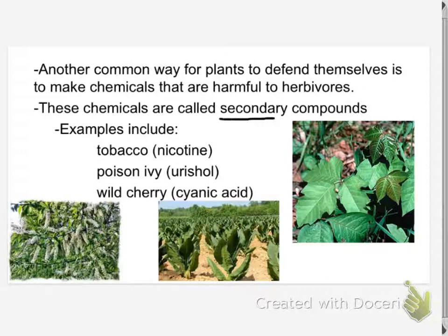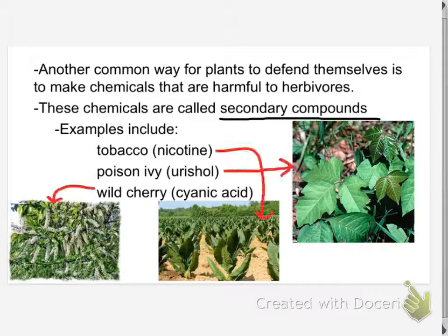The first one we can discuss is tobacco. Humans use tobacco — it's intoxicating to humans. There's a chemical in it called nicotine. The first time you ever use tobacco, you're probably going to get lightheaded. It's a stimulant, it's a drug, it's a mild poison. It has this interesting effect on the human nervous system.